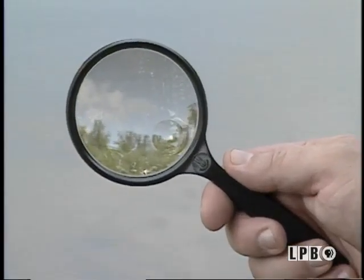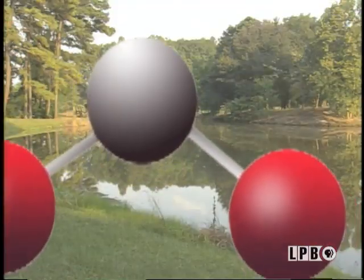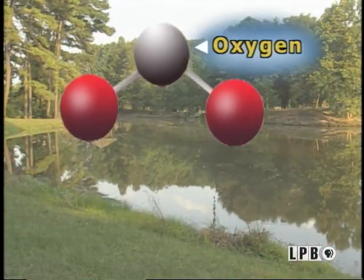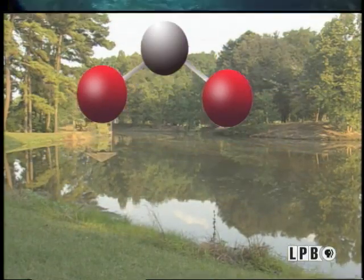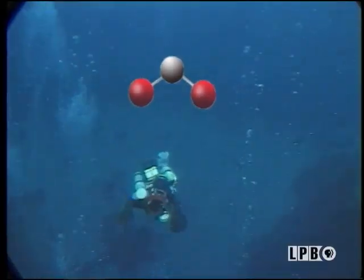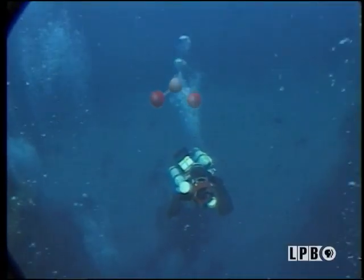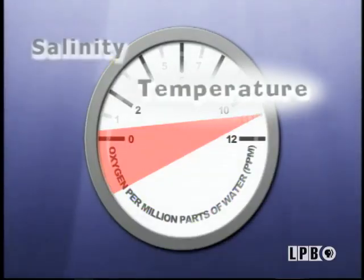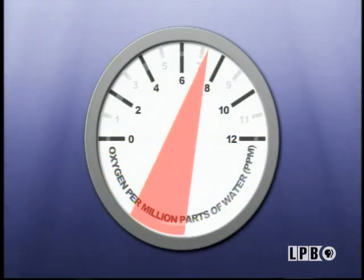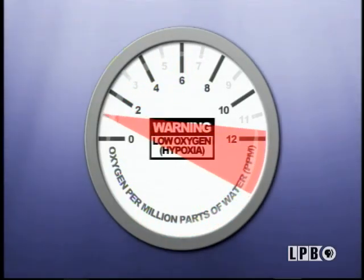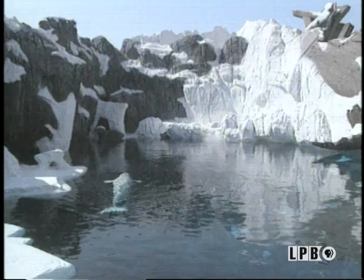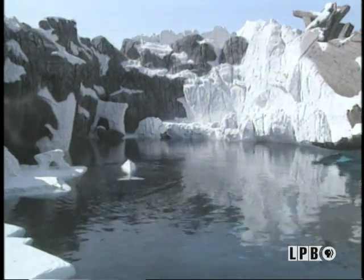Now let's take an even closer look at water. The water molecule is part oxygen, but that's not the oxygen that aquatic life uses. Oxygen from the air, or that is released by aquatic plants, dissolves in water — and that's the oxygen that water organisms consume. Depending upon the temperature and salinity, or salt content, a concentration of less than two parts of dissolved oxygen per million parts of water is known as hypoxia. Colder water usually holds more dissolved oxygen than warmer water. Now let's get hypoxia's big picture.